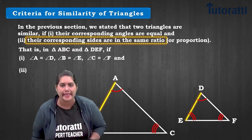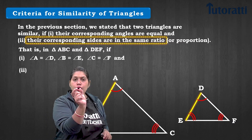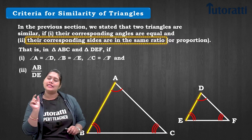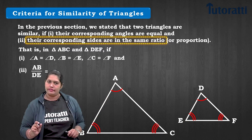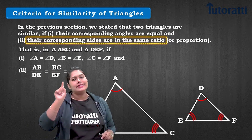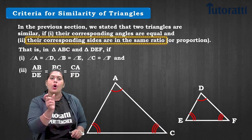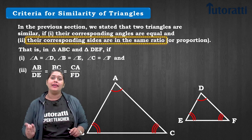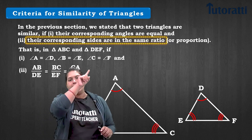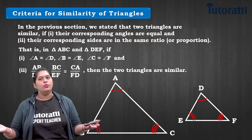The second condition: the ratios of corresponding sides must be equal. For triangle ABC and DEF, the first pair is AB/DE, then BC/EF, and then AC/DF. If all these ratios are equal, then triangle ABC is similar to triangle DEF.